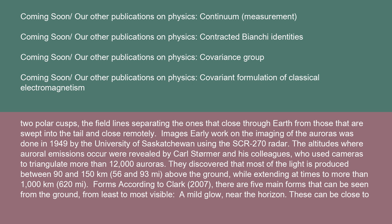Early work on imaging of the auroras was done in 1949 by the University of Saskatchewan using the SCR-270 radar. The altitudes where auroral emissions occur were revealed by Carl Störmer and his colleagues, who used cameras to triangulate more than 12,000 auroras. They discovered that most of the light is produced between 90 and 150 kilometers (56–93 miles) above the ground, while extending at times to more than 1,000 kilometers (620 miles).